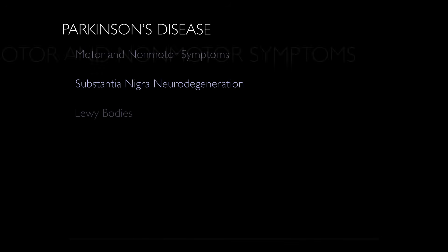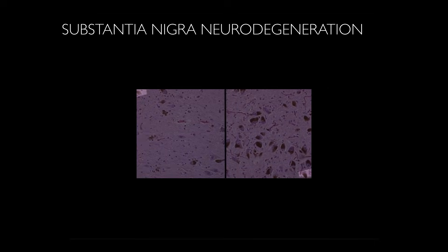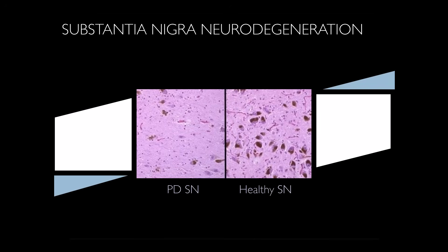These symptoms are linked to neurodegeneration in the substantia nigra, a region of the midbrain crucial to motor control. As the figure shows, individuals with PD have a 70-80% decrease in neuronal density in the substantia nigra.